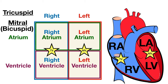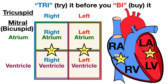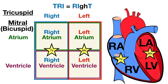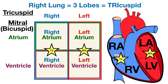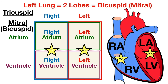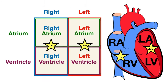To remember that the tricuspid valve is on the right and the mitral valve is on the left, here are three tricks. First: 'try it before you buy it' — tricuspid comes before bicuspid. Second: the letters T-R-I in tricuspid also appear in the word 'right.' Third: the right lung has three lobes and the tricuspid valve, where tri means three, is on the right; the left lung has two lobes and the bicuspid valve, where bi means two, is on the left.